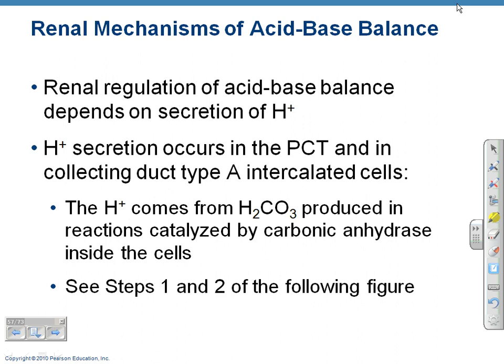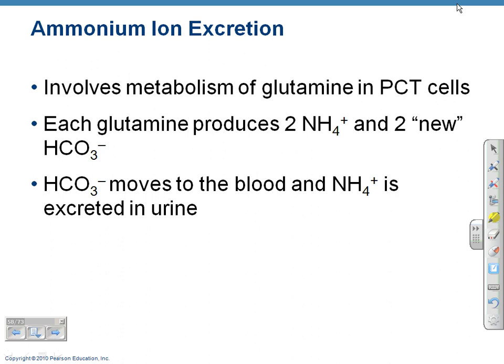Hydrogen ions are secreted in the proximal convoluted tubules, coming from carbonic acid produced in reactions catalyzed by carbonic anhydrase. When breaking down amino acids, we generate lots of ammonium. Glutamine is an important one — each glutamine that's broken down generates two ammonium ions and two new bicarbonates. The bicarbonate moves into the blood and ammonia is excreted in urine.